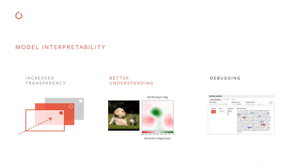You might ask why is model interpretability important? It is important because it helps us to better understand our model's predictions and understand how our models reason. Most importantly, it facilitates debugging misclassified predictions. And the better we understand our models, the more likely it is that we'll improve them and push the boundaries of cutting edge research.